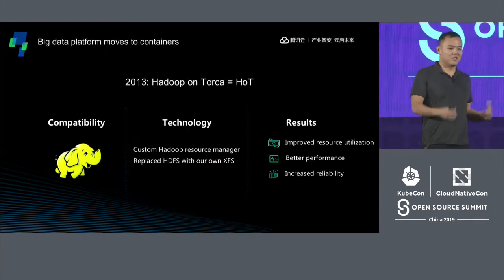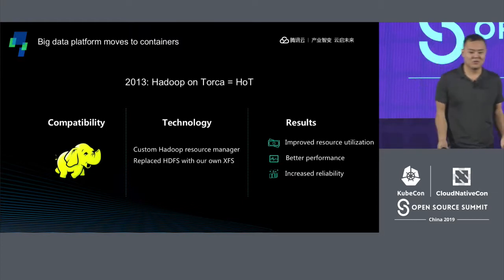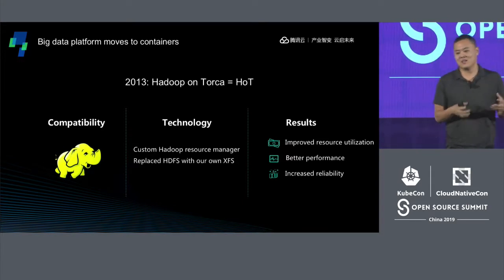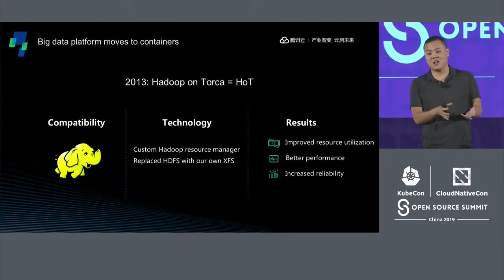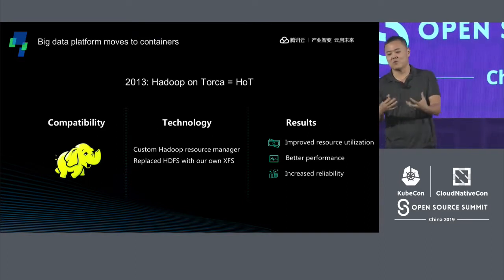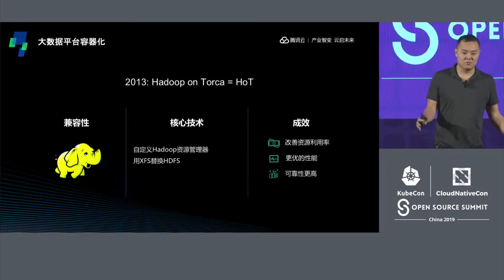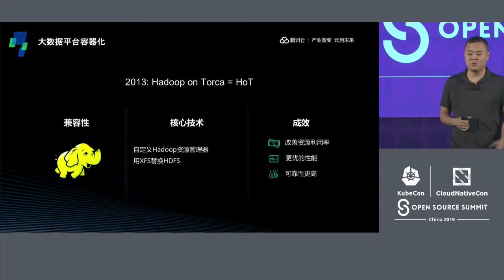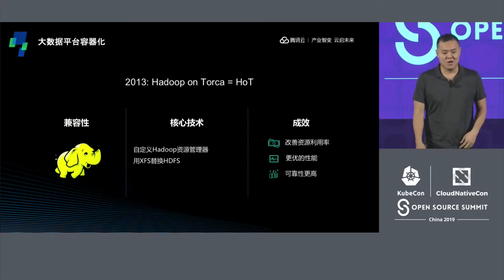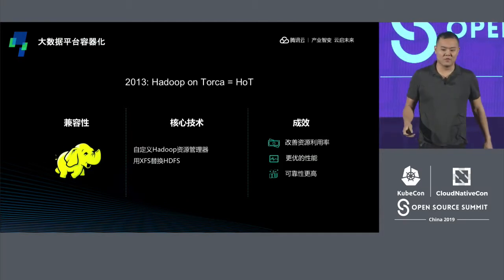Fast forward to 2013 — containers were going well on Torca and we decided to move our big data platform onto it as well. This is where Hadoop on Torca came along. A really important requirement was 100% compatibility with Hadoop so our engineers didn't have to change a single line of code. We rewrote the Hadoop resource manager on top of Torca, and replaced HDFS with our own custom distributed file system called XFS. This improved resource utilization, performance, and reliability of big data jobs.